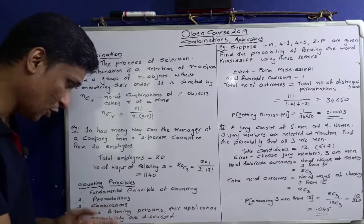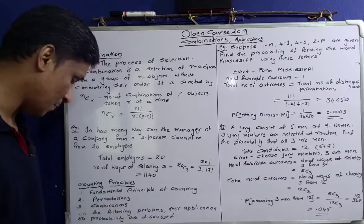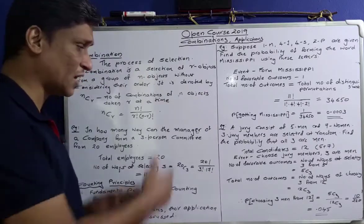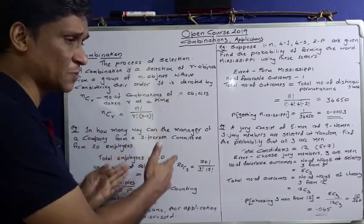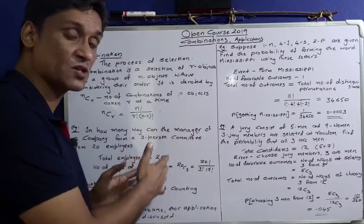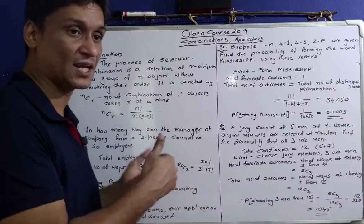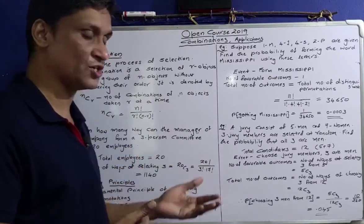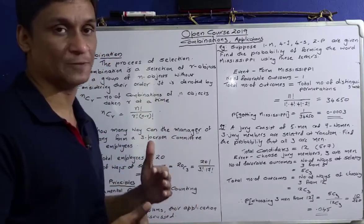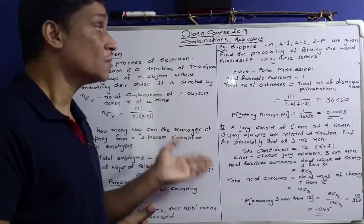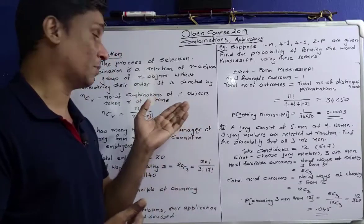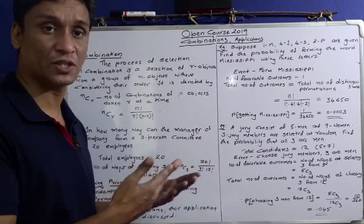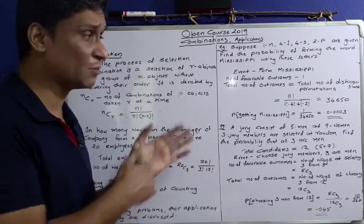In the following problems, their applications to probability are discussed. The fundamental principles of counting — how is the counting performed? How do permutation and combination work? The fundamental principle of counting takes all your problems.